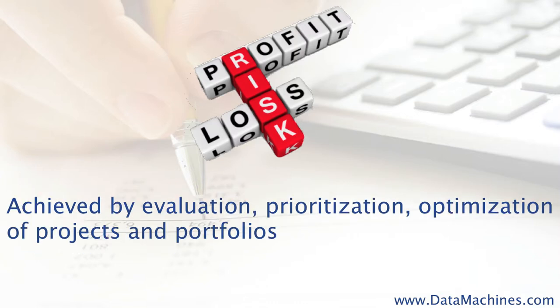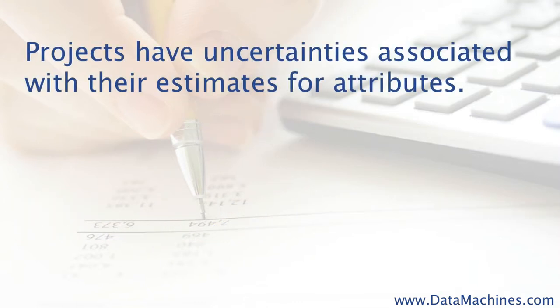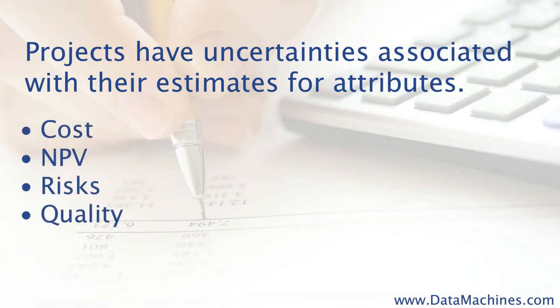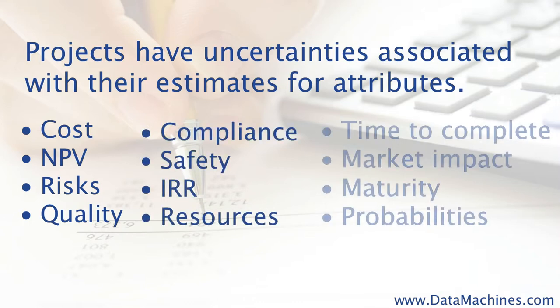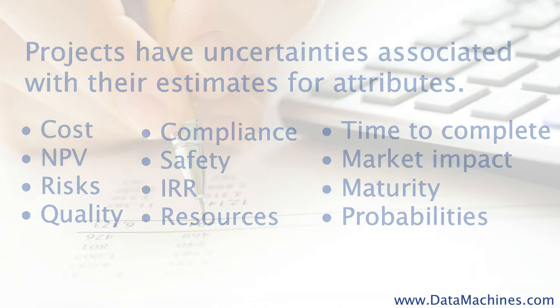Each one of these steps - evaluating, prioritizing, and optimizing - has uncertainty associated with the inputs. By uncertainty, I am referring to the estimates around business attributes such as net present value, ROI, cost, number of resources required, time to market, risks, and so forth. All of these types of business attributes have uncertainty associated with the estimates that we make.